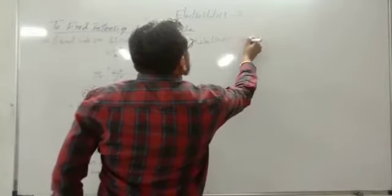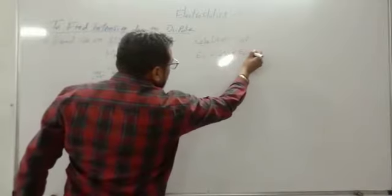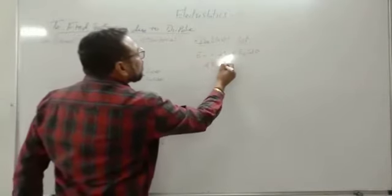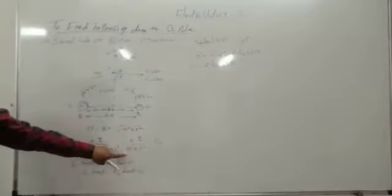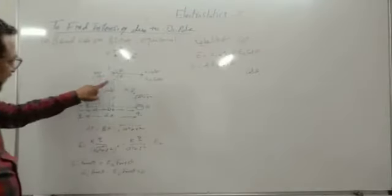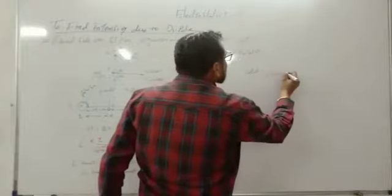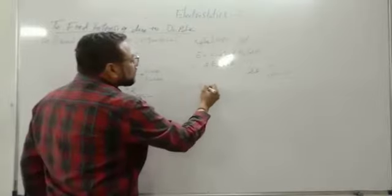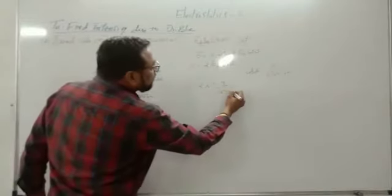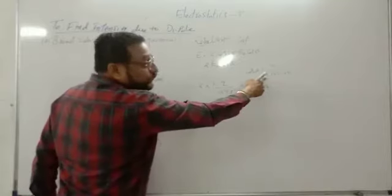The resultant intensity E is equal to E1 cos theta plus E2 cos theta. Since E1 equals E2, E equals twice E1 cos theta. Now we find cos theta. Cos theta equals A over the square root of A squared plus R squared. Put this in the equation: E equals 2 times kQ/(A² + R²) times A/(A² + R²)^(1/2).